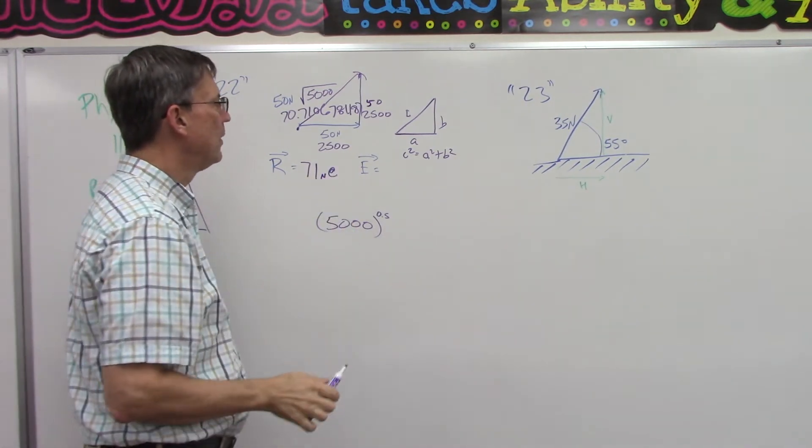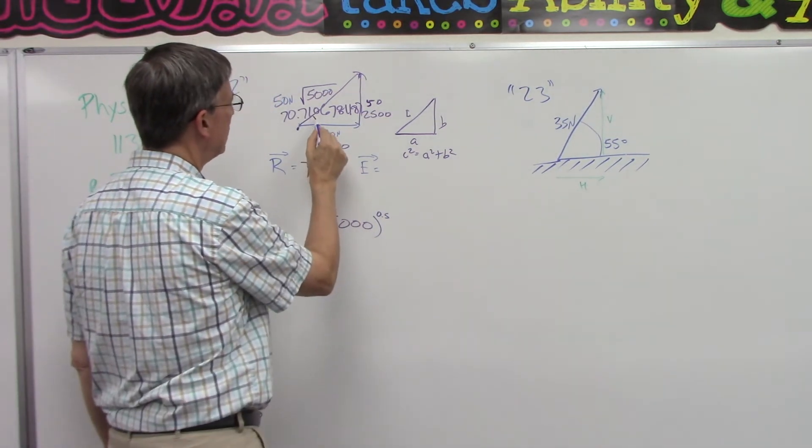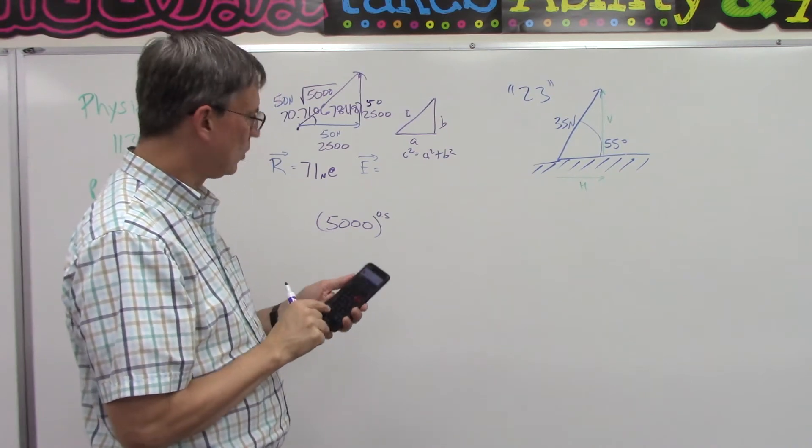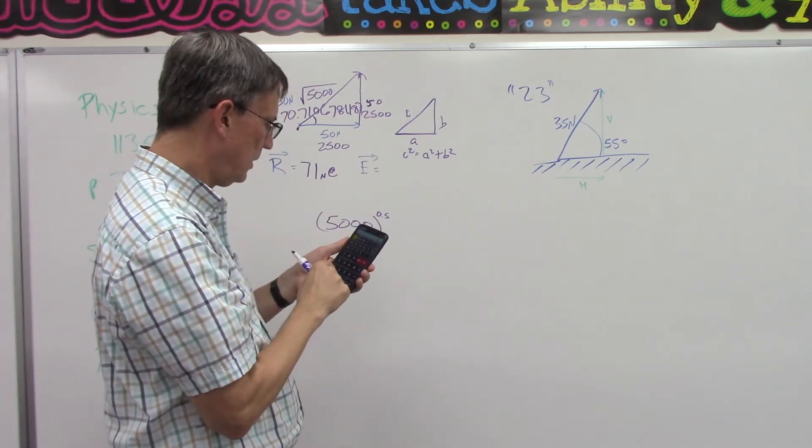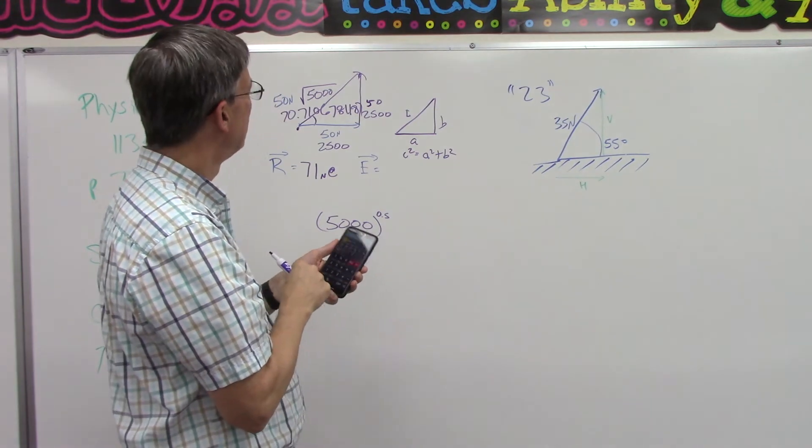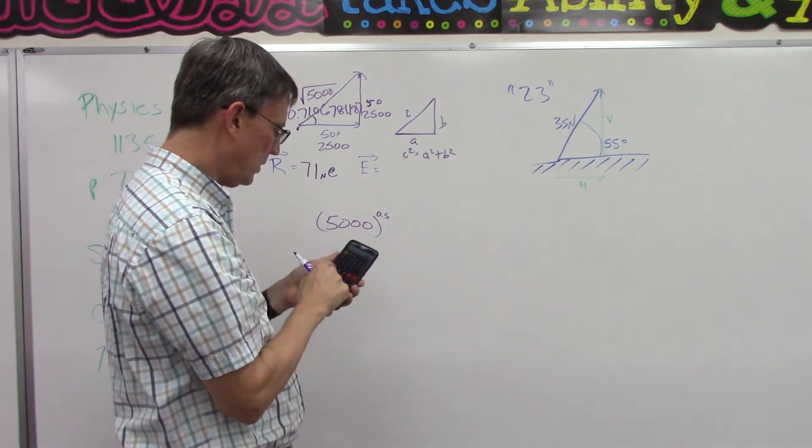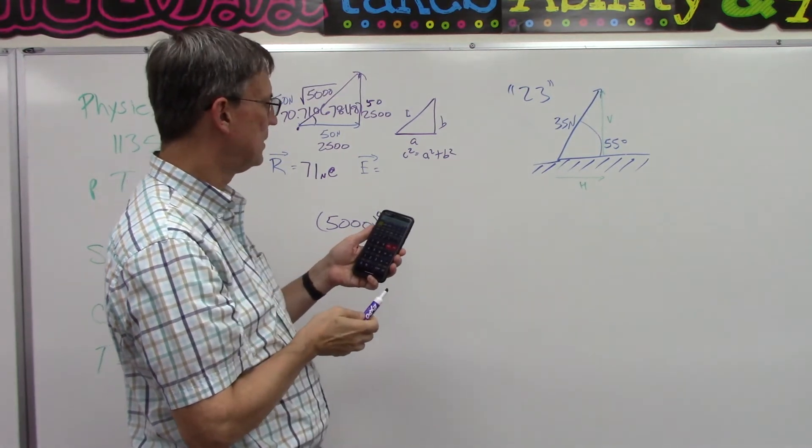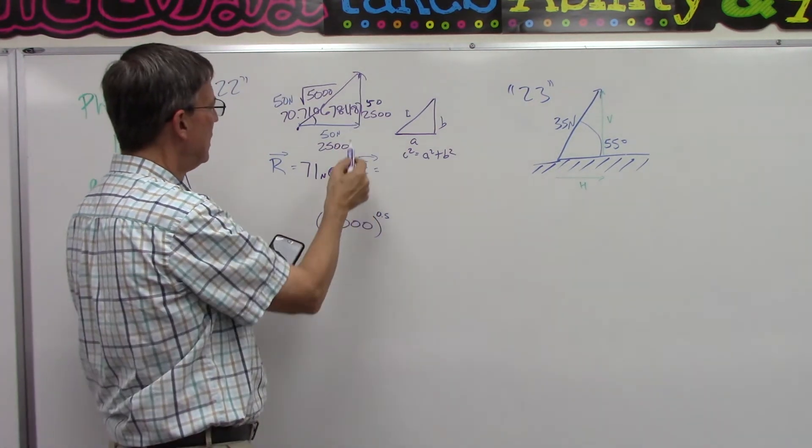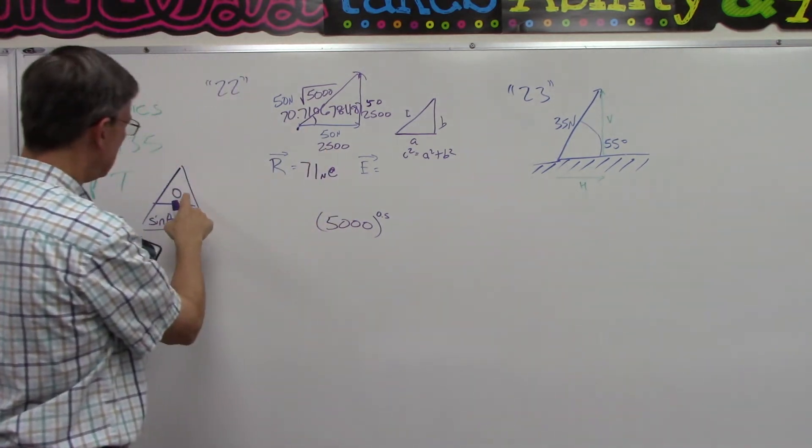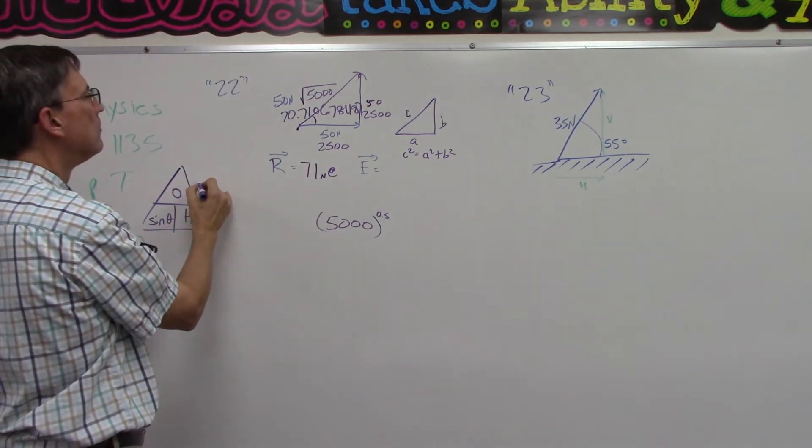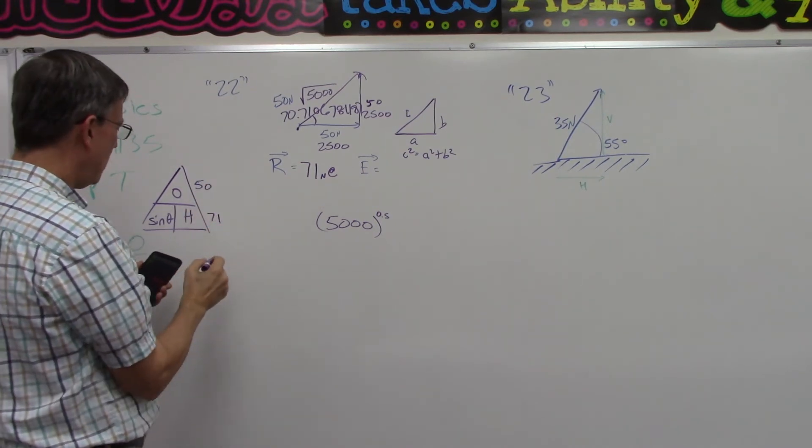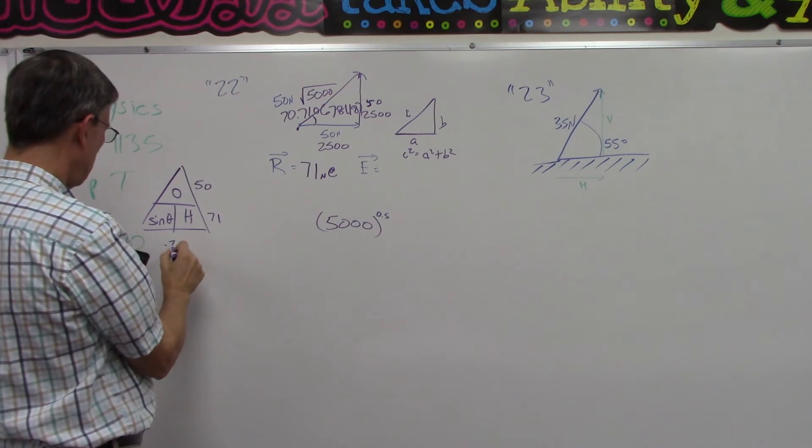Newtons at, now we're going to figure out how many degrees is this angle right here. So let's take the 50, which is the opposite, 50, divided by the hypotenuse, which is 71. And that gives us 0.7. So opposite was, what did we say, 50? And the hypotenuse was 71. So I get 0.704.